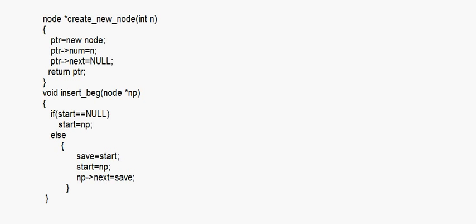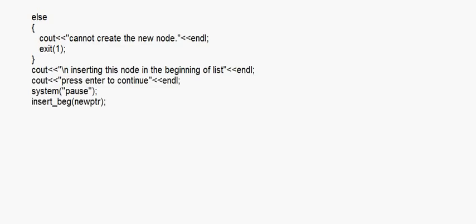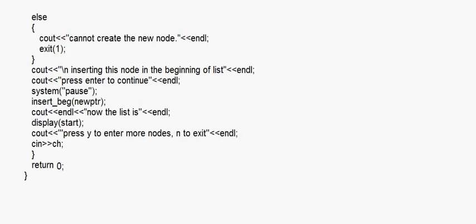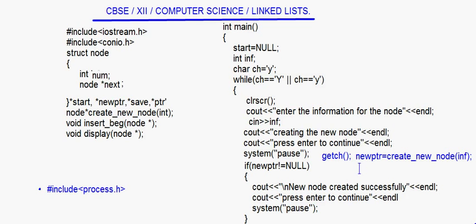ptr is basically an address. Since this is of node type — ptr = new node — it will have two parts because the node structure has two parts: num and next. Now we say ptr->num = n, where n is the inf passed from main, that is 11, and ptr->next = null. Then return ptr. Supposing the address given is 1011, so this ptr is 1011 — this 1011 is returned to new_ptr in main. So new_ptr now contains the address of the new node, that is 1011.